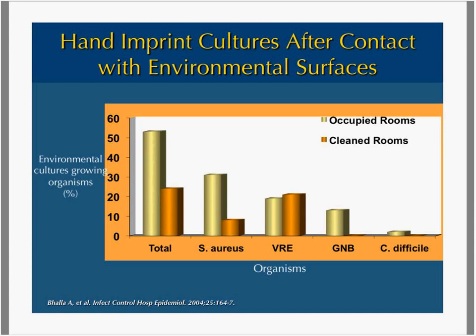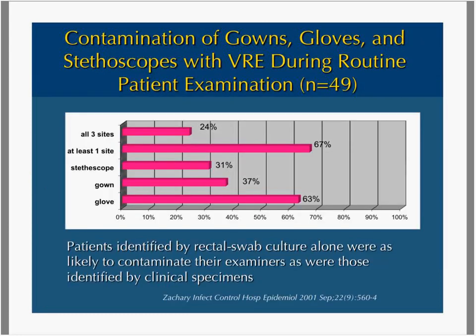Many of these bugs have a predilection for the environment. Examples include Staph aureus, VRE, gram-negative bacilli, and C. difficile — and these are present in occupied as well as cleaned rooms. A VRE study shows that many objects in rooms where these patients live get contaminated. This kind of data really drove the French, as well as Dr. Piquet, to focus on hand hygiene as a significant prevention strategy.